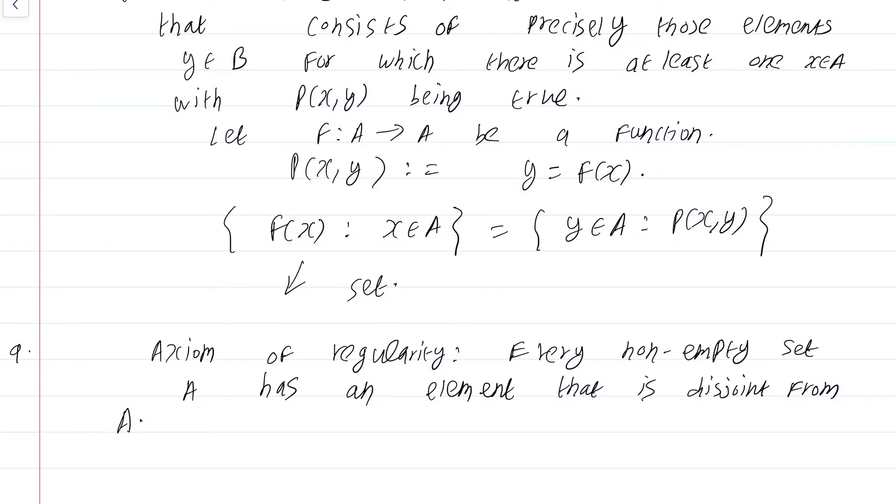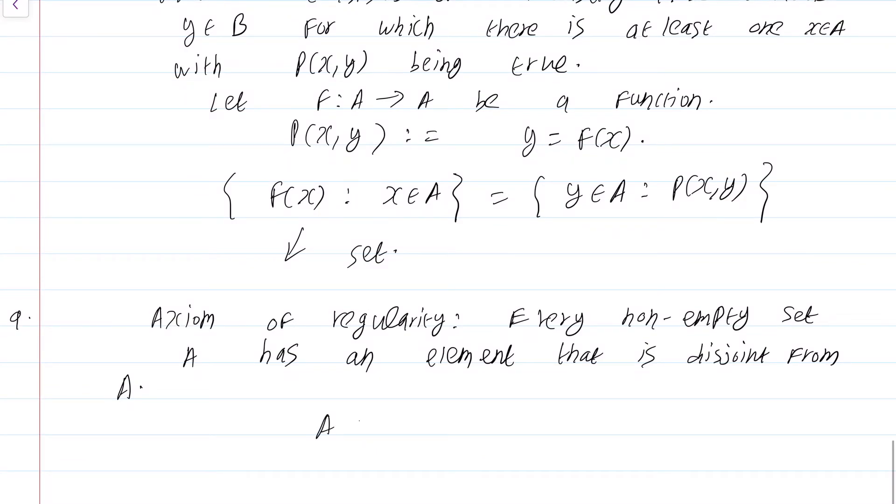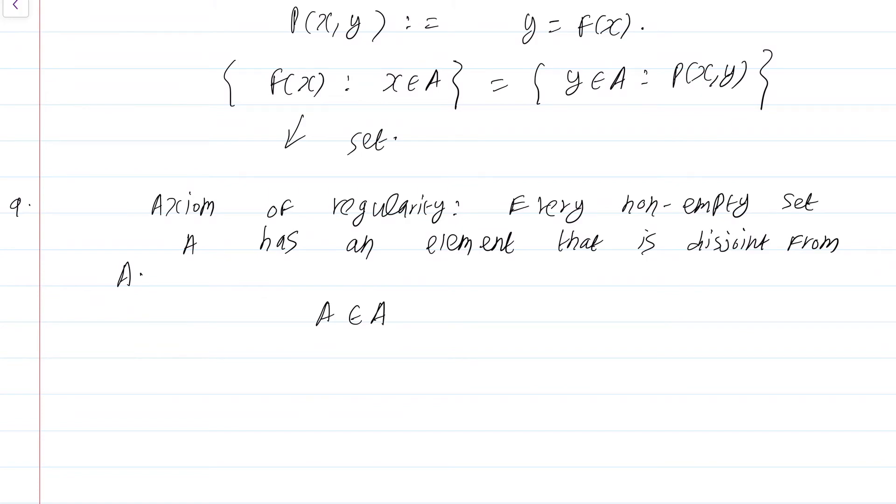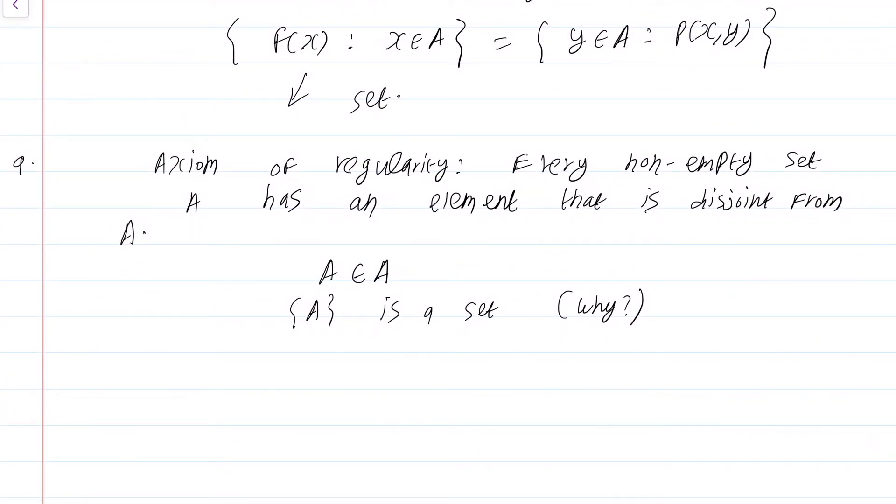This axiom rules out pathological scenario in which we can have A being an element of A, a set being an element of itself. In fact, you can prove this from the axioms that we have developed. The pairing axiom says the set {A} is a set. Now, what does the axiom of regularity say? It says that A intersects {A} has to be empty. Why is this the case? Because A is the only element of {A}.